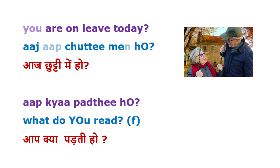He says aaj chutti me ho — aaj meaning today, chutti me ho. He can drop aap there. But then the next phrase, aap kya padthi ho, he reintroduces aap. You will often see that if you keep dropping aap or tum continuously, it leads to confusion. So every once in a while, you reintroduce aap to make clear you are using the aap-ho combination and not tum-ho.